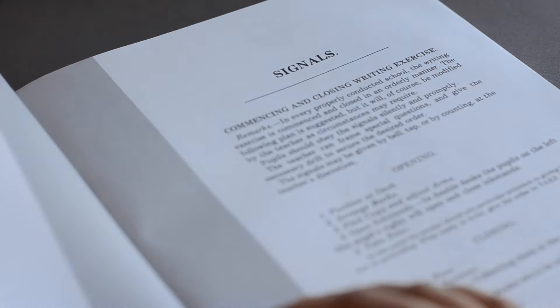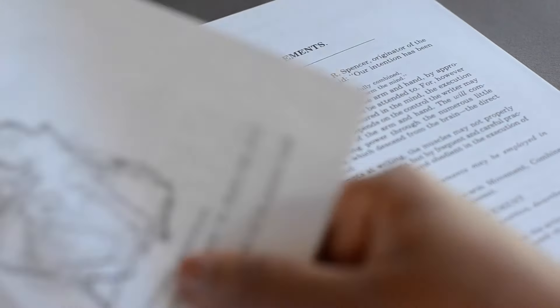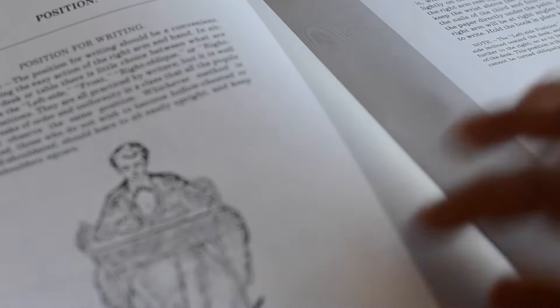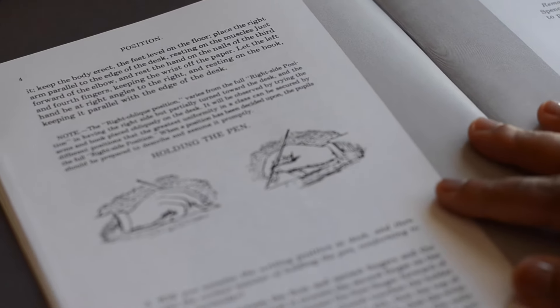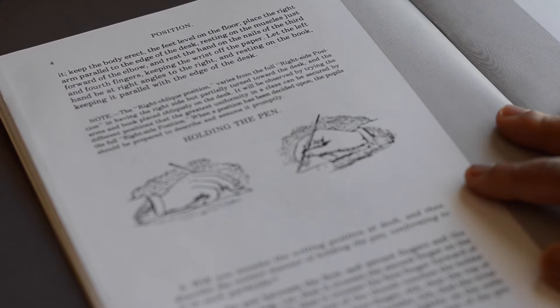So these books were initially written by Platt Rogers Spencer's five sons for classroom usage in the late 1800s and now they're reprinted so they're quite readily available. The set I bought has one instructor book and five workbooks.